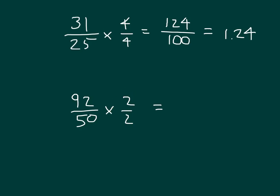Ninety-two times 2 is 184, and 50 times 2 is 100. So we have one hundred eighty-four hundredths, which is written as 1.84.